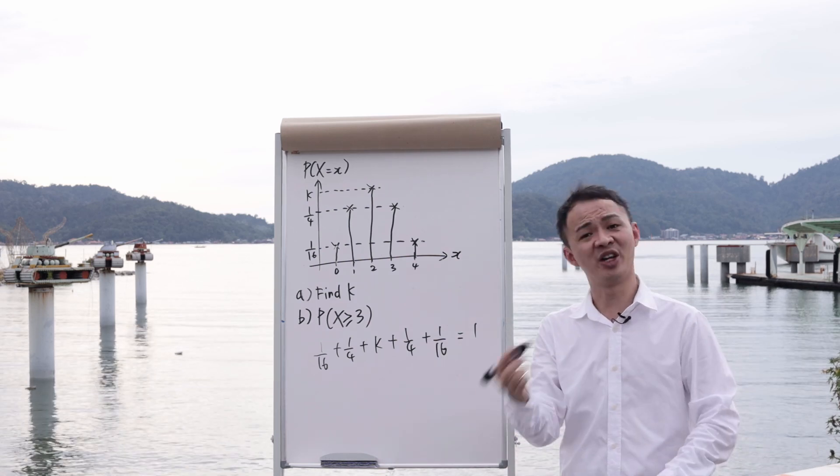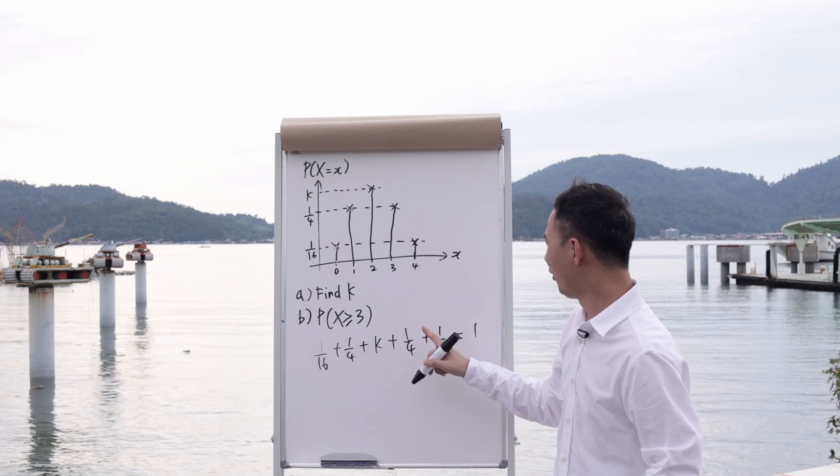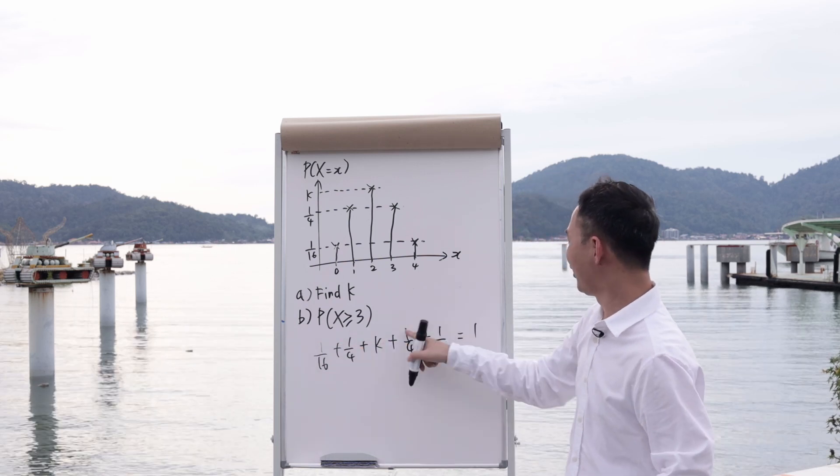This is how you can find the value of k here. And then you should add quickly here, this is 1, 4 is 5, 5 and 4 is 9, 10.